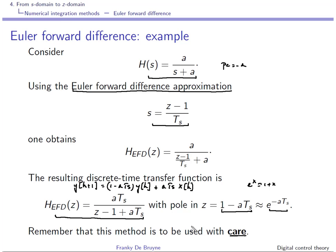Normally there should not be a problem if Ts is chosen sufficiently small. But the problem, of course, is defining what 'sufficiently small' means. Remember this method must be used with care — a stable system could become unstable after discretization.